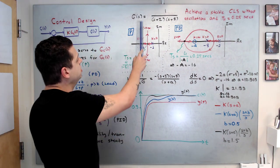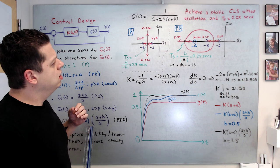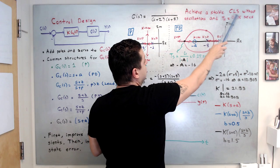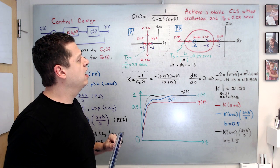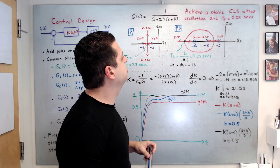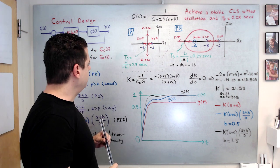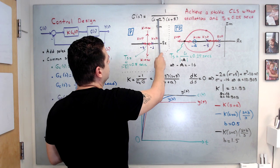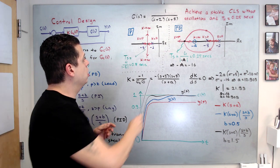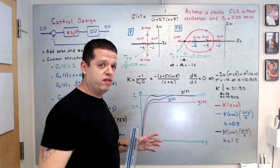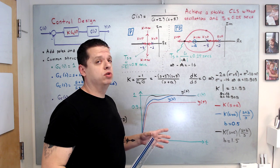Let's do an example. Consider this plant transfer function: 1/((s+2)(s+8)). Our objective is to achieve a stable closed-loop system without oscillations and a settling time of 0.25 seconds. I try the P compensator first. The plant's forward loop poles are located at minus two and minus eight. If you sketch the root locus, you get this shape — refer to my other videos on how to sketch root locus diagrams.